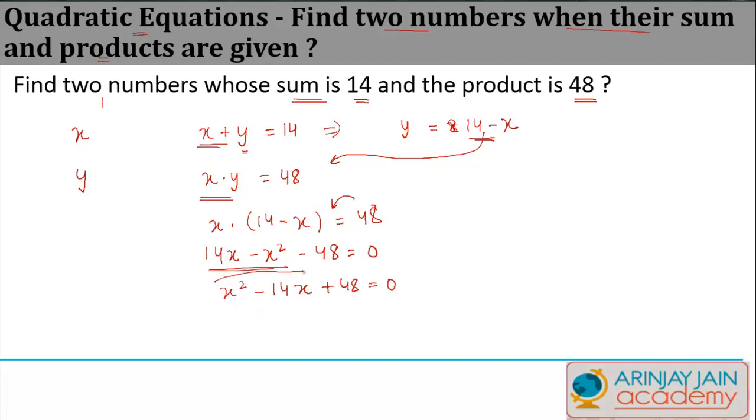Now what is the product of the coefficient of these two numbers? It is 48 times 1, which is 48. We need to divide minus 14x into two parts such that their sum is equal to, if I write this as minus 8x and minus 6x, their sum is equal to minus 14x, but the product of their coefficients, which is minus 8 and minus 6, is equal to 48. And then I write this as plus 48 is equal to 0.